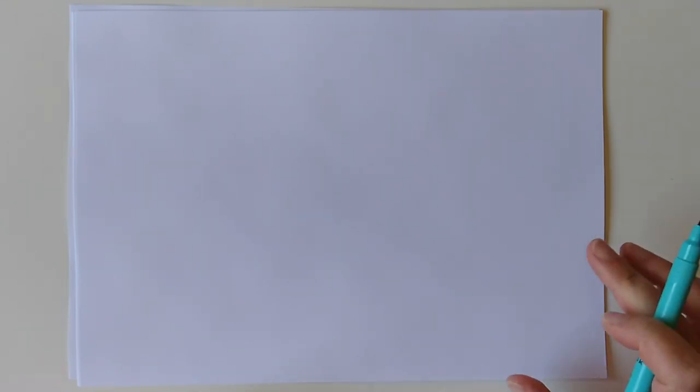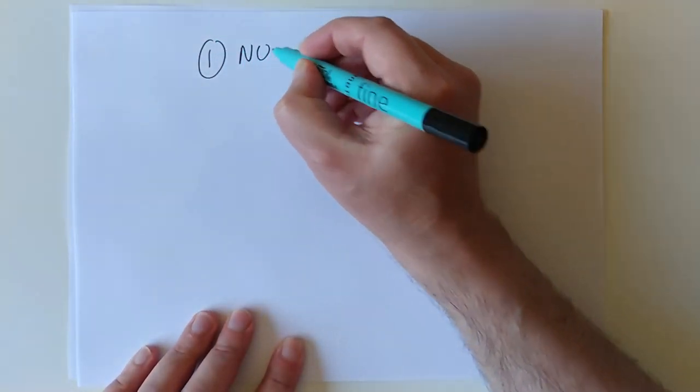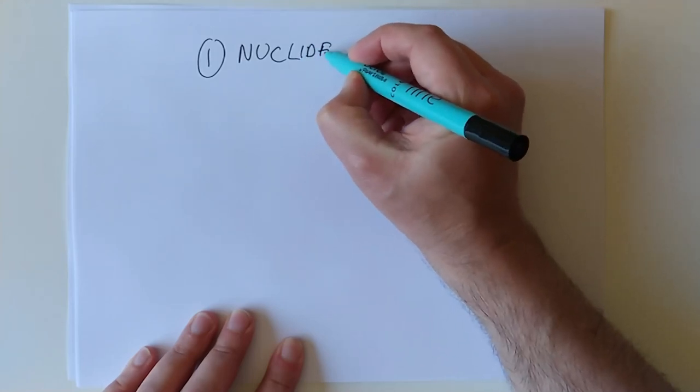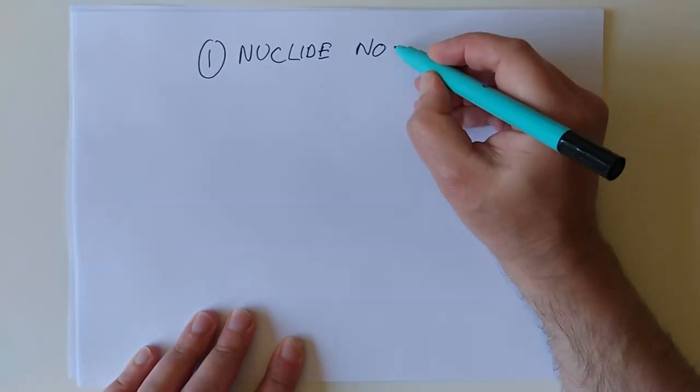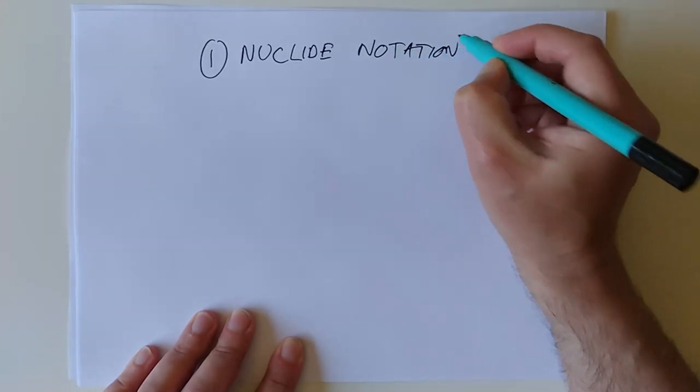Good morning, National Fire Chemistry. I thought I'd make another video for this week. It's slightly more personal than just the slideshows. I'm going to talk to you today about three learning outcomes. Number one is something called nuclide notation. It sounds really fancy, but it's just the way you write down an atom symbol. So, nuclide notation.